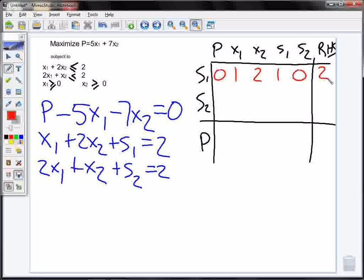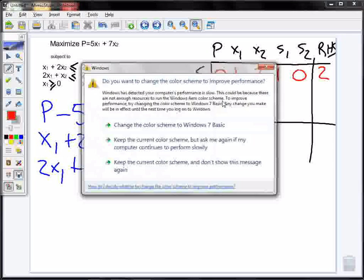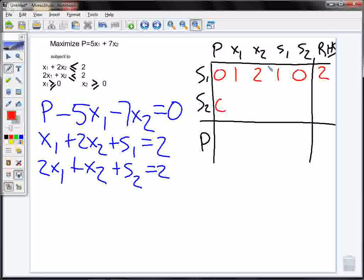Now I look at my second equation. Again, there's no p, so it's 0. I see the 2x1, I have a coefficient of 2. I have a coefficient of 1 on the x2.